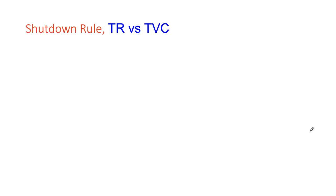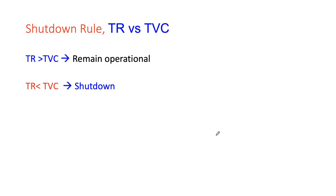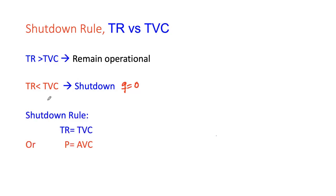You should only produce some positive quantity if your revenues at least cover your variable costs. Once revenues have covered variable costs and exceed them, at least a part of your fixed costs will also be covered, making your losses smaller. If revenues do not cover variable costs, just shut down — remaining operational will only continue to increase your losses. So a firm should remain operational if it can cover its variable costs, such as paying its workers. If you cannot even cover variable costs, you should shut down.